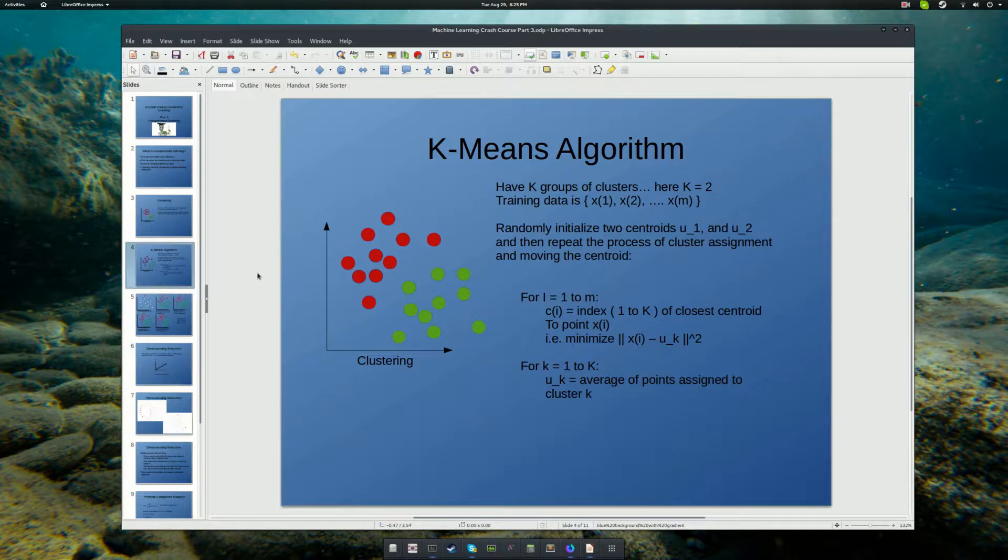The algorithm is to randomly initialize two centroids. In other words, a centroid is the center of a group. And in this case, we're going to have two of them, u1 and u2, because we have two clusters. And we're going to repeat the process of cluster assignment and moving the centroid over and over.